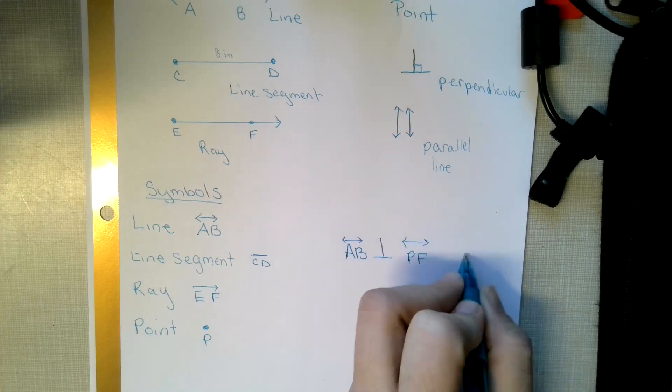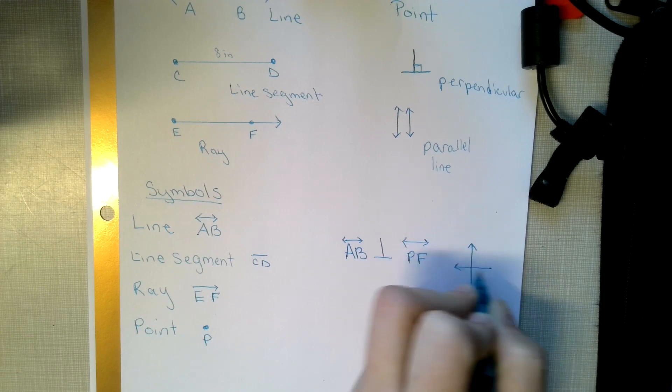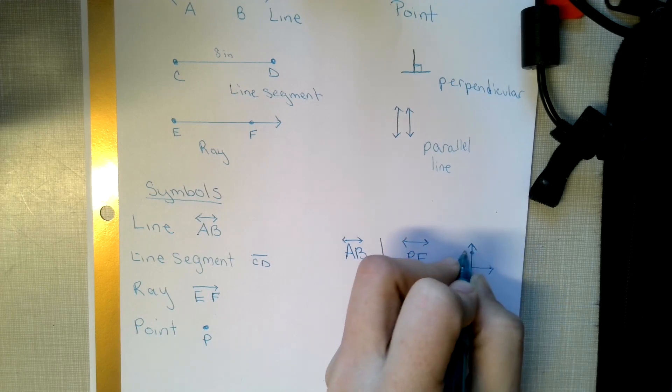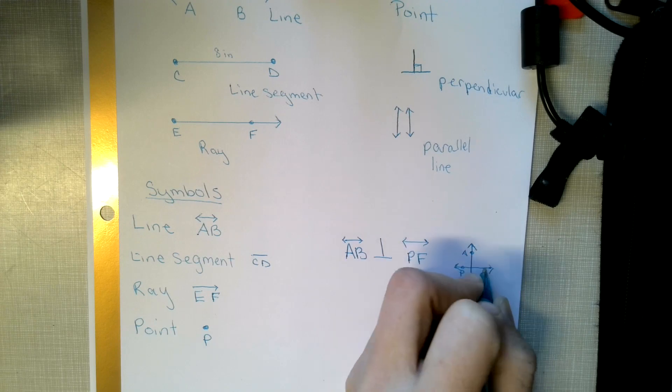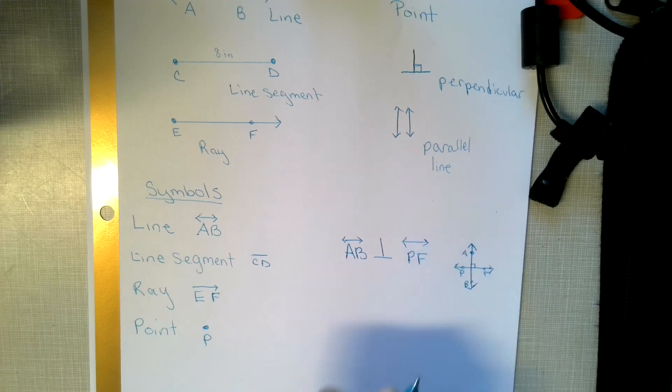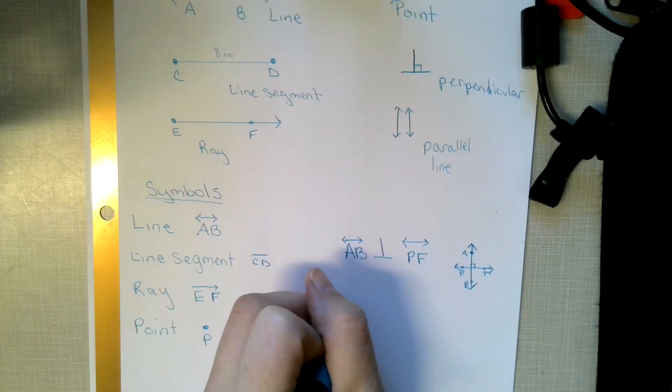And what I mean by that would be I had something like this and this was AB and this is PF. And I did that. I could say AB is perpendicular to PF and parallel.